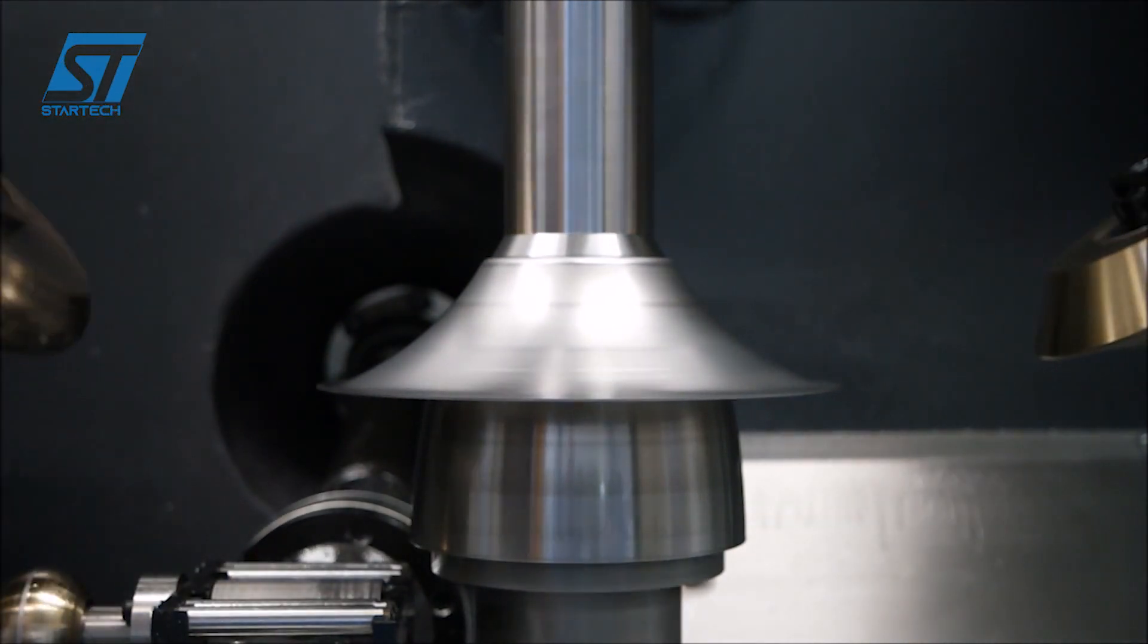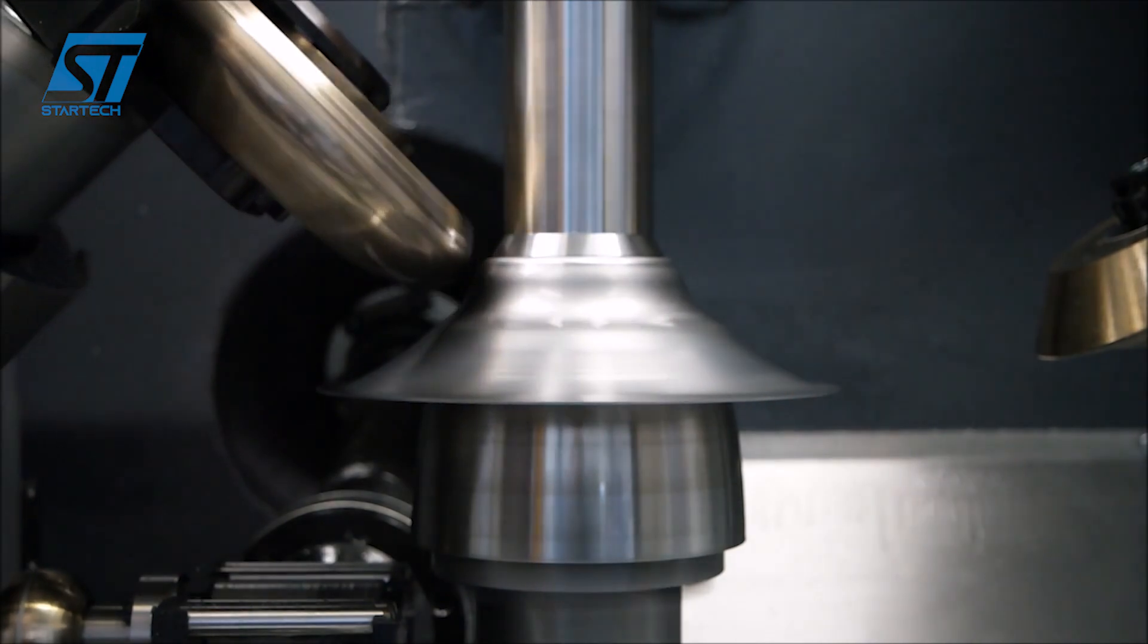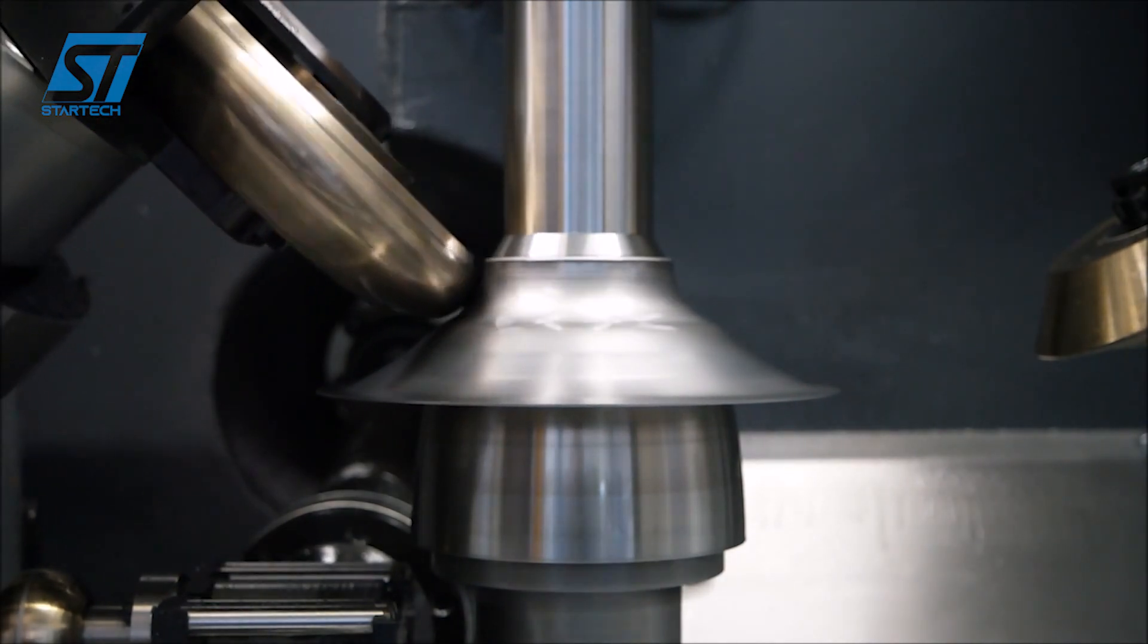Steel, especially at 2mm thickness, requires significant force to deform. The Premo 600 is built to handle this.